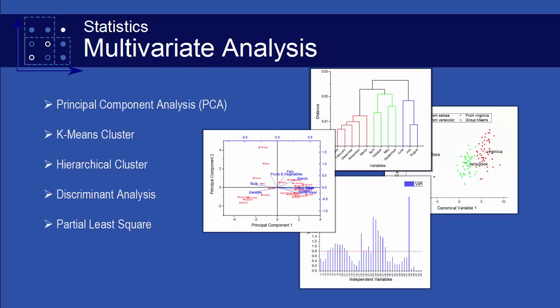There are five multivariate analysis tools available exclusively in Origin Pro: principal component analysis, k-means cluster, hierarchical cluster, discriminant analysis, and partial least squares. These tools allow you to examine how variables are related to one another and how they work in combination to distinguish between multiple cases of observations.